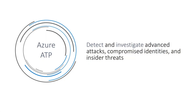Azure ATP is basically the ability to monitor Windows Server Active Directory on-prem AD, and there's a sensor that you install on the domain controller that sends signals back up to the cloud to monitor, detect, and investigate advanced threats, such as identities that have been compromised, malicious insider threats, golden ticket, pass the hash, pass the ticket, and so on.